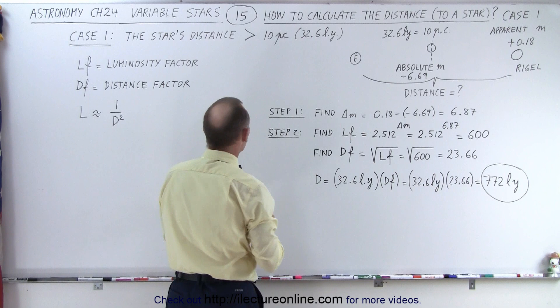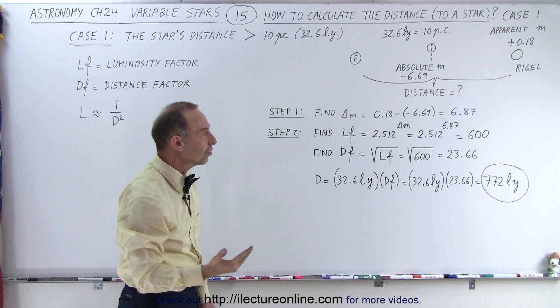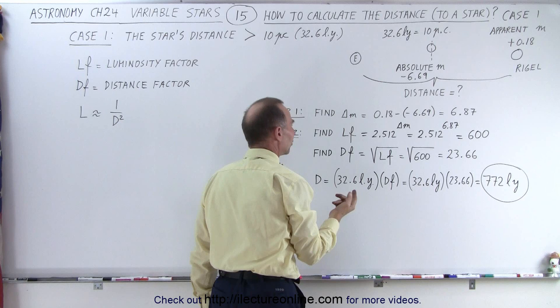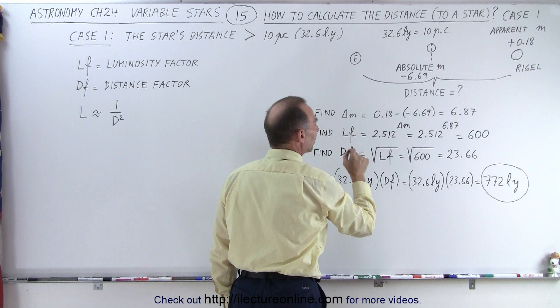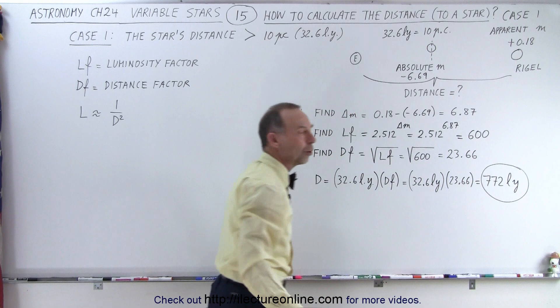Then you take step 2. You find what we call the LF, the luminosity factor. So how much more luminous is Rigel at this position versus that position? The way that's done is we take the number 2.512 and raise it to the difference in the magnitudes. In other words, 2.512 raised to 6.87 gives us almost 600.